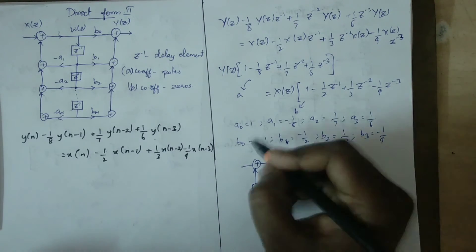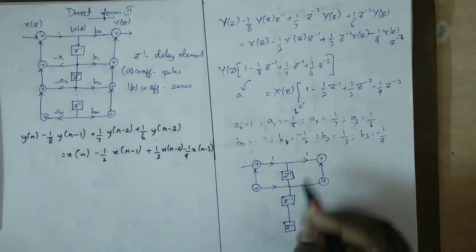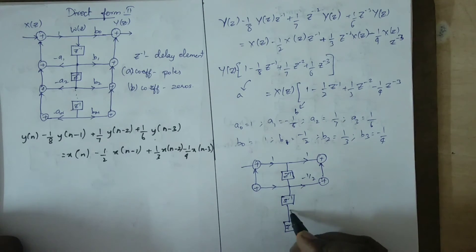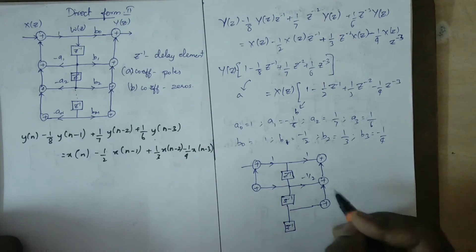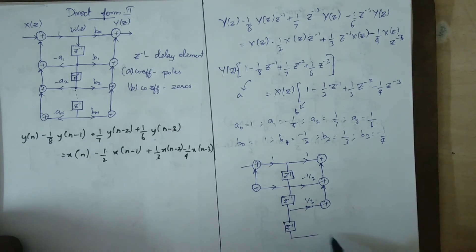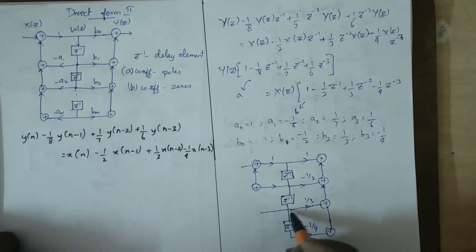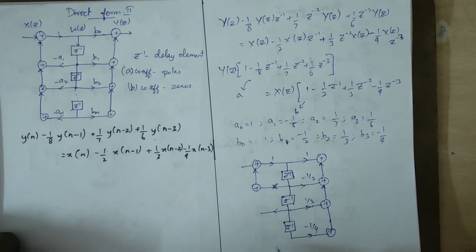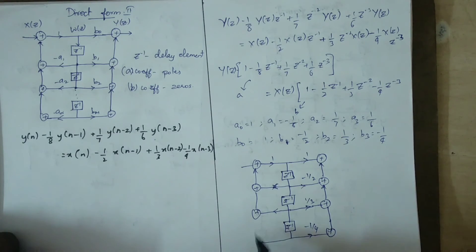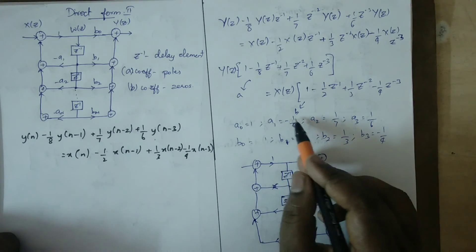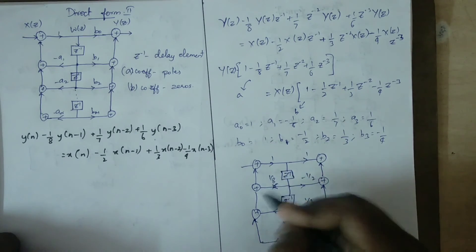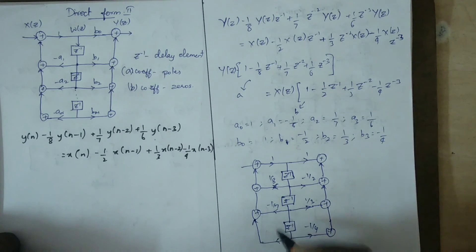So we are going: b0 = 1, b1 = -1/2, and again we are going to add. b2 = 1/3, and again adder and connect. b3 = -1/4, and adder. So minus of a1: we are going to add 1/8, so minus 1/8, minus 1/7, minus 1/6.